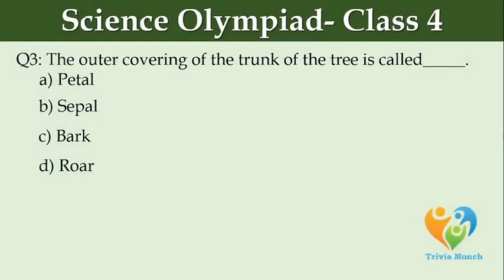The outer covering of the trunk of the tree is called dash. Option A: petal. Option B: sepal. Option C: bark. Option D: root.